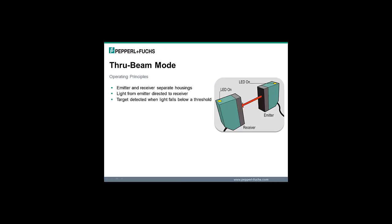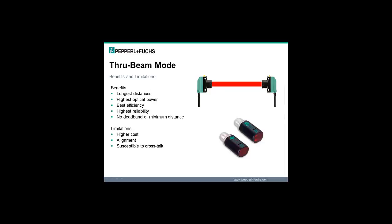The last of the basic sensing modes is the through beam mode sensor. Through beam mode sensors have their emitter and receiver elements contained in separate housings. Light from the emitter is directed to the receiver, and the target is detected when the light at the receiver falls below a specified threshold. Benefits include the longest detection distances, the highest optical power, the best optical efficiency and highest reliability compared to other sensing modes, and no sensor deadband or minimum detection distance.